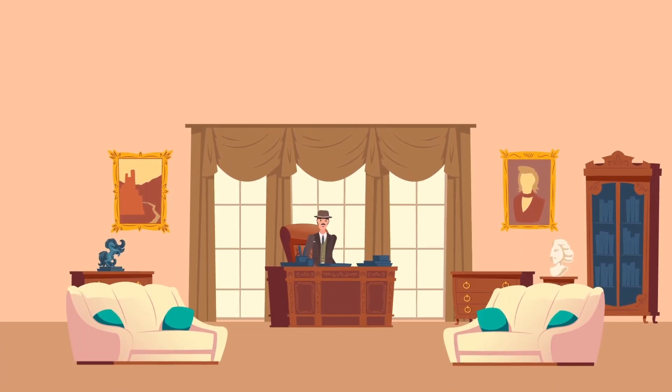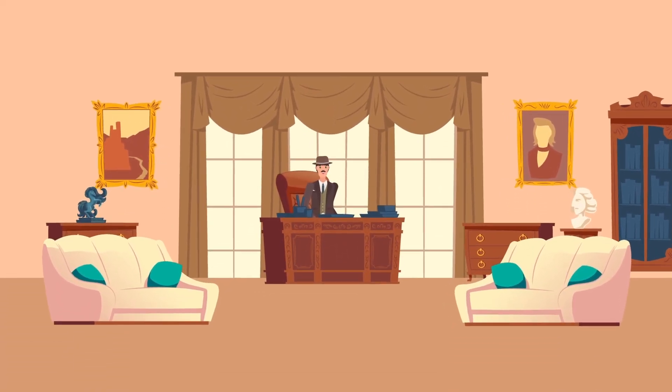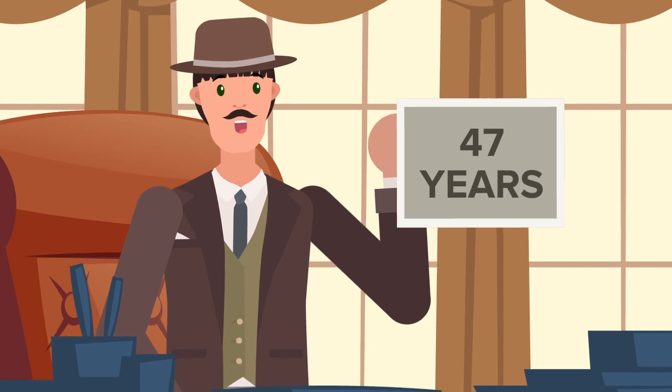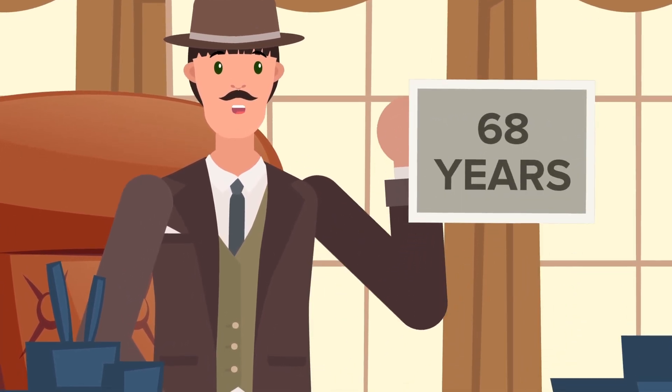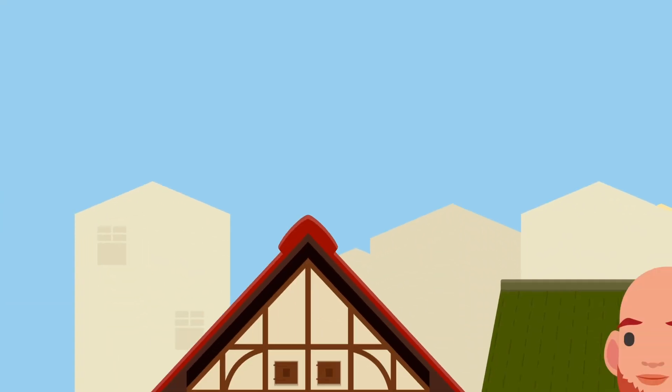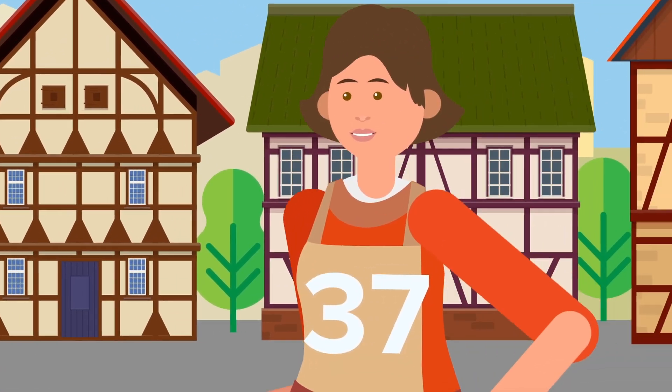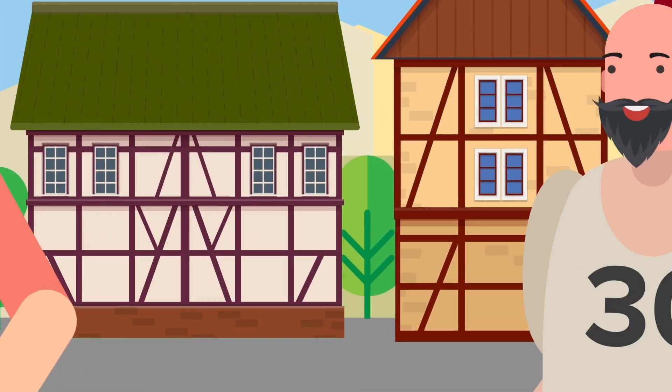In 1950, just 70 years ago, the global life expectancy was just 47 years. And in the US, it was only slightly better at 68 years. If we go back a little further, the average life expectancy in Europe in 1800 was between 30 and 40 years.